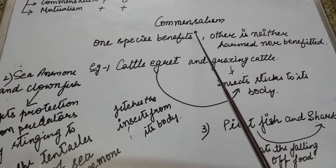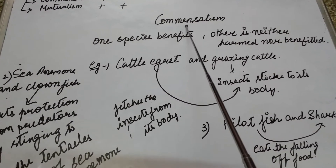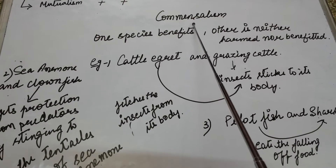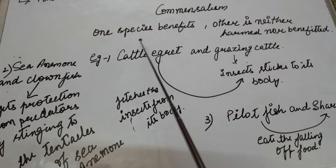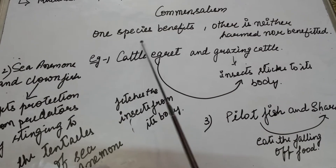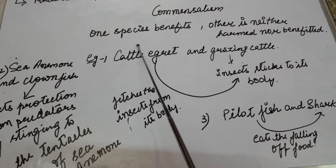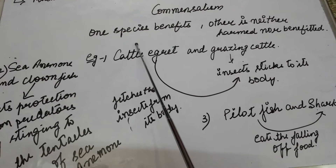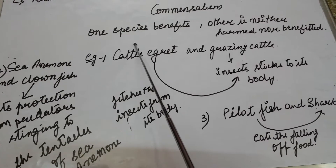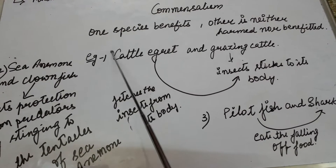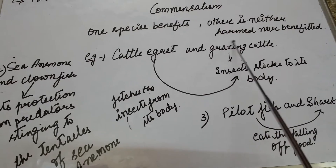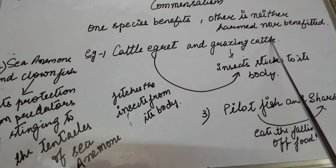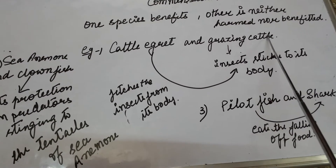In this video, we are going to study about commensalism. It is the interaction or the relationship in which two organisms — living individuals of different species — are interacting in which one is benefited while the other is neither harmed nor benefited.